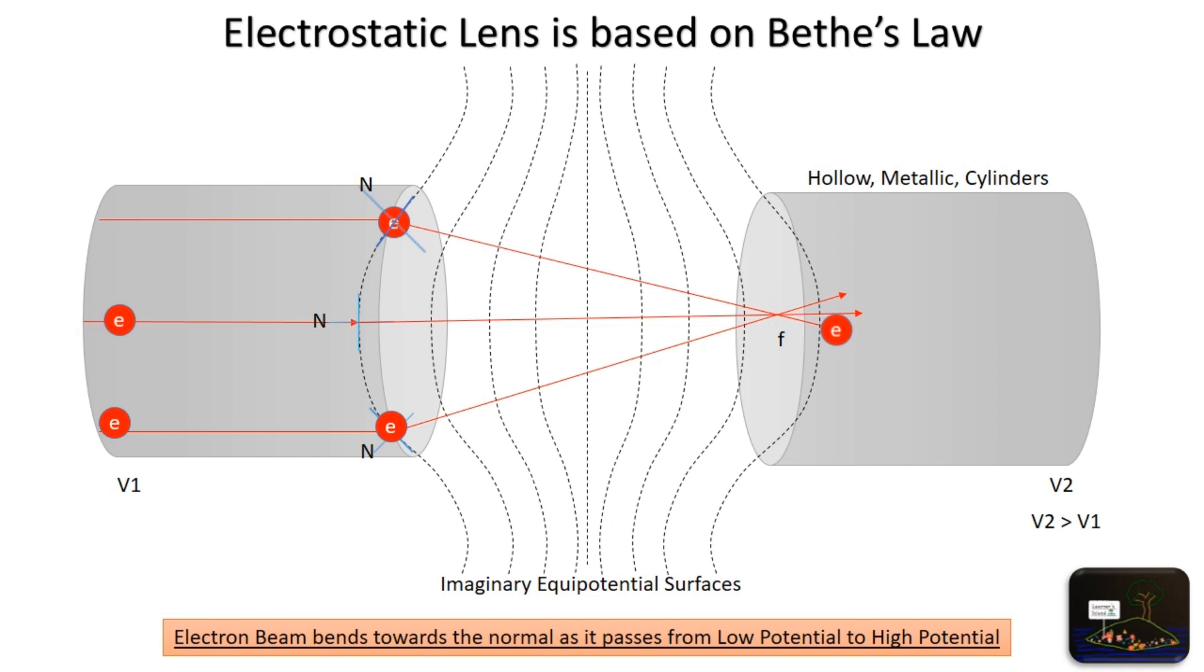Similarly, electron moving in the middle will be falling on the equipotential surface along the normal, making it go straight, while electron beam moving on the downward side will move upward.